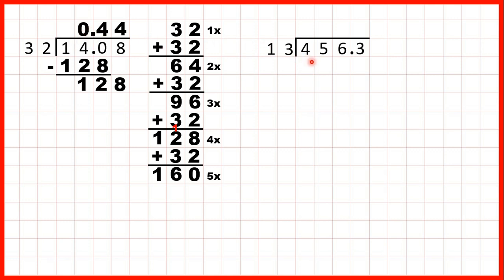So now let's move on to this question. We have 456.3 divided by 13. Again, we can start by copying the decimal point up into our answer, and now we need to work out the 13 times table.